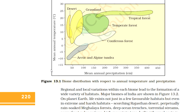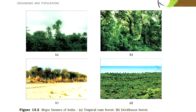Regional and local variations within each biome lead to the formation of a wide variety of habitats. Major biomes of India are shown in figure 13.2. On planet earth, life exists not just in a few favorable habitats but even in extreme and harsh habitats: scorching Rajasthan desert, rain-soaked Meghalaya forest, deep ocean trenches, torrential streams, permafrost, snow-laden polar regions, high mountain tops, thermal springs, and stinking compost pits. Even our intestine is a unique habitat for hundreds of species of microbes.